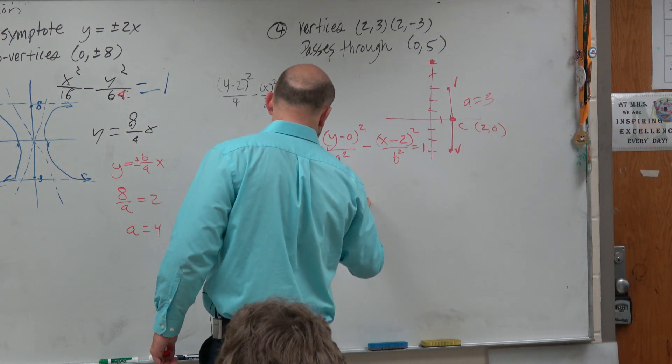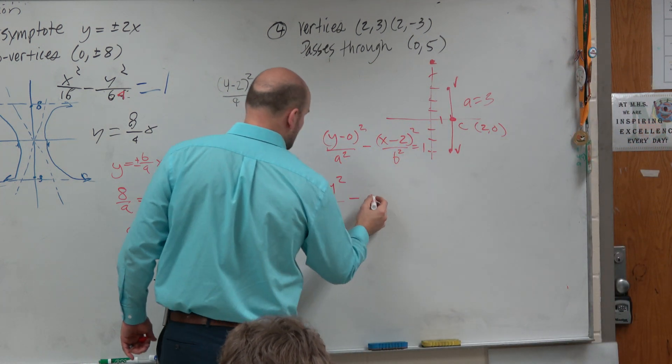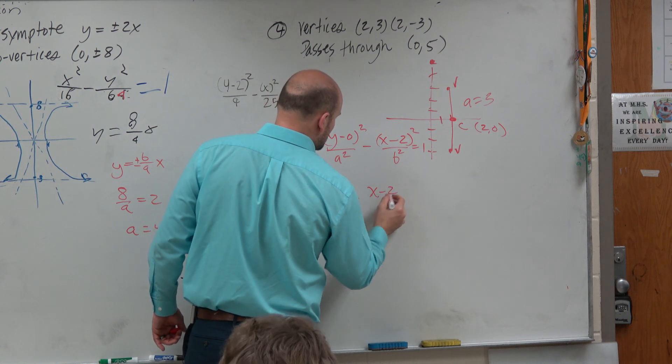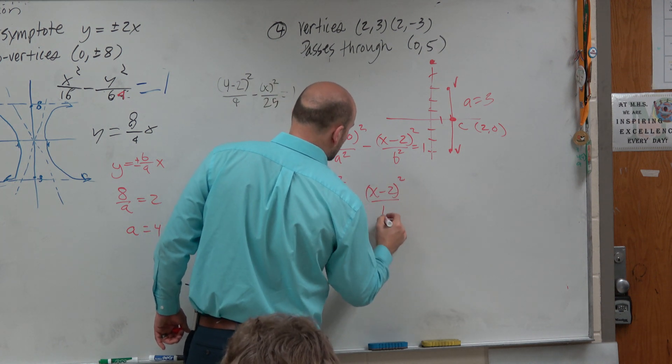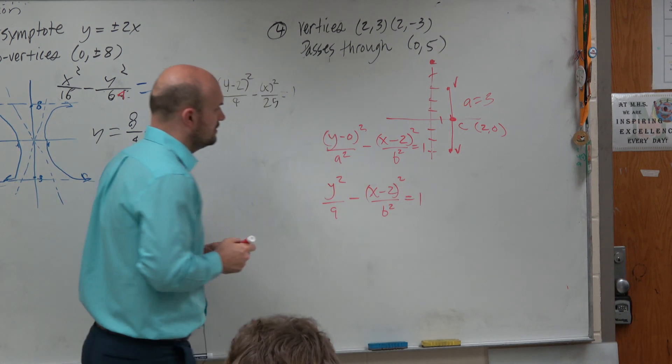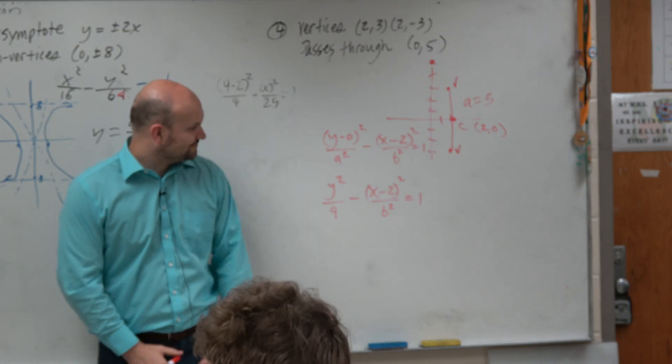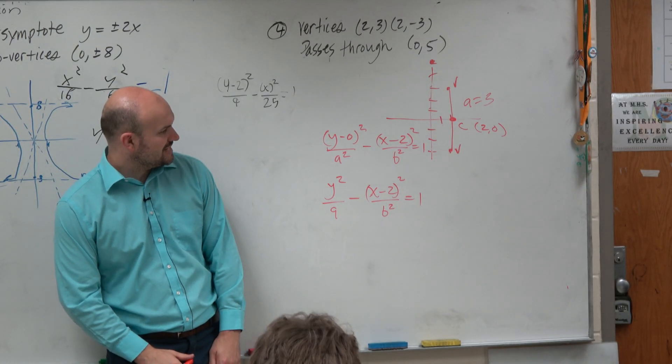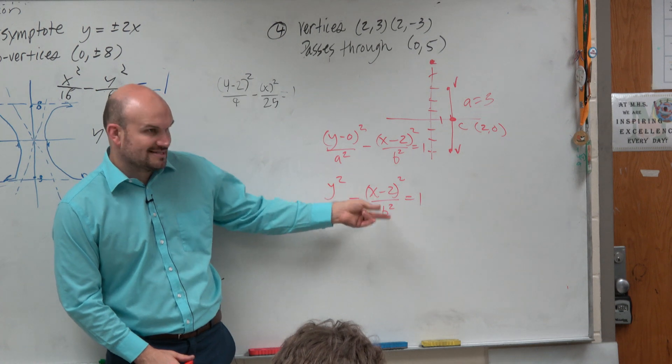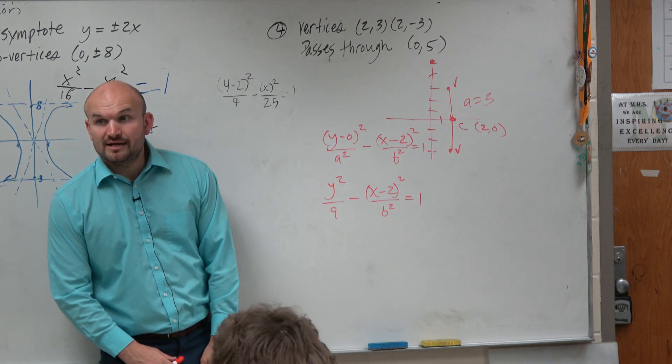Therefore, I can just rewrite this as y squared over 9, minus x minus 2 squared over b squared equals 1. Now the problem is, I have a y, an x, and a b, right? As unknowns.